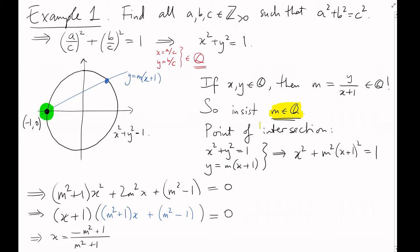So, it turns out that when m is rational, x is always rational too. Okay, putting this x value back into the equation of our line, we get y equals 2m over (m squared plus 1), which is, again, rational.